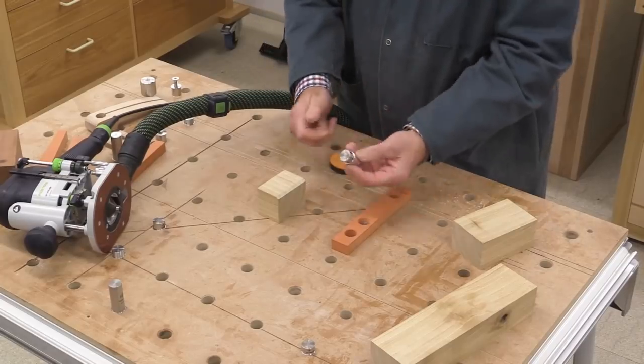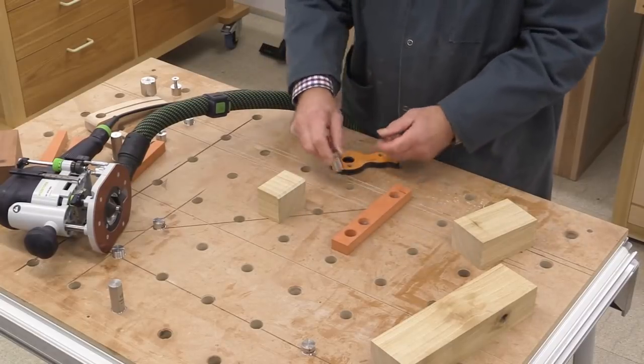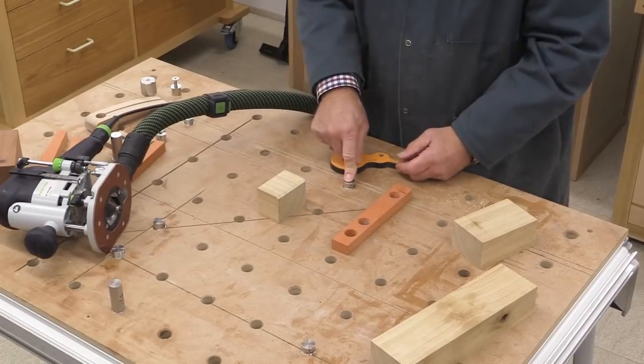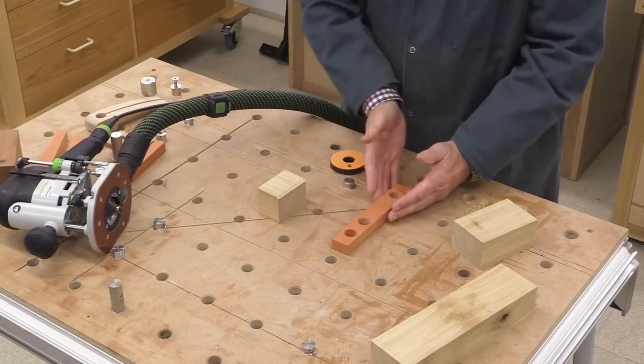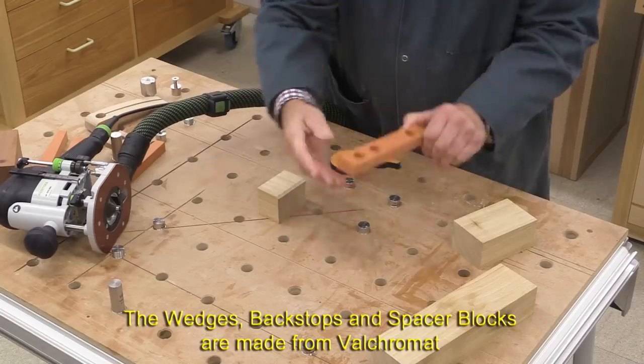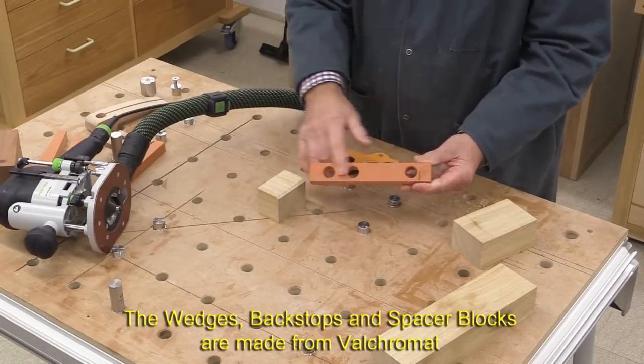Now in order for it to function, here we have one of the guide pups, which is in one of the holes here in my MFT3. Then we needed a backstop. And this is the backstop. Notice it's got three holes.